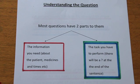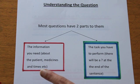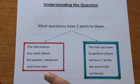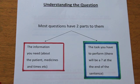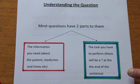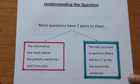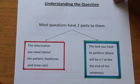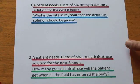Most questions of this type have two parts. The first part is the information you're given about the patient, the medicines, or the times they have to be given — this could be on a patient's chart in a hospital. The second part is the actual task you have to perform, which is the question part, and there should be a question mark at the end of that sentence.